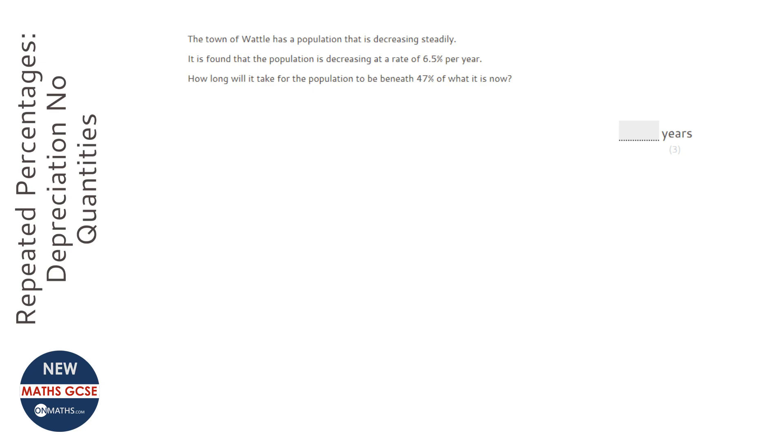This question will all be about multipliers and understanding how to use them. But the difficulty in this question is we're finding out how long it will take to get to a certain point, which is a big twist, and we're not given a quantity. Now whenever you're not given a quantity, one method is putting in your own quantity, and the easiest quantity to put in is the number 100.